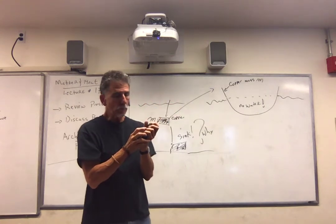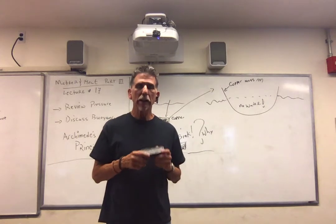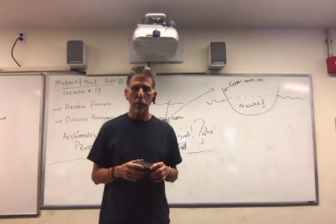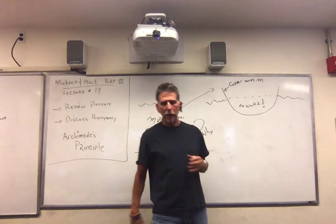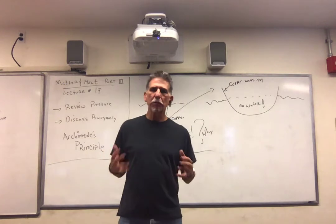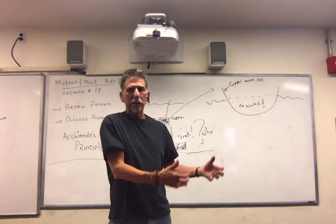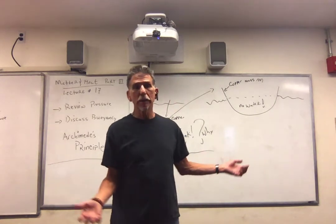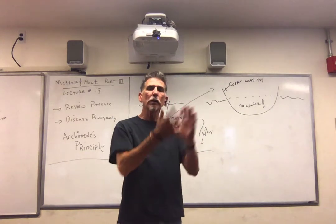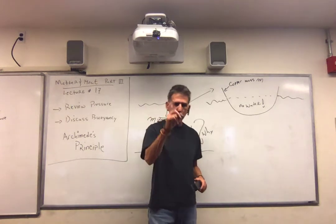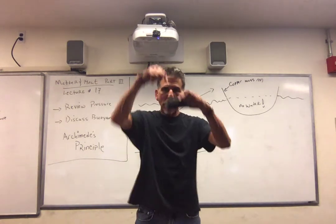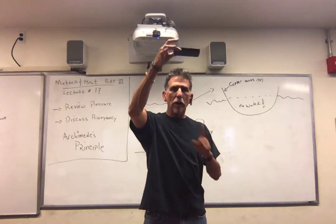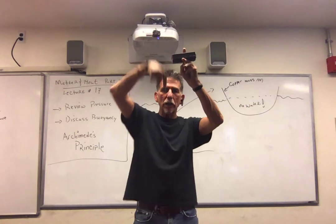Archimedes' principle says that there's going to be a force upward called the buoyant force. You know about this: when you try to lift your friend Vito — guy weighs a ton — when you go in the ocean and try to lift him, it's easier. The water seems to be helping. So the buoyant force is a force upward, and the weight is the force down. Clearly, if something's going to float, the force upward has to be greater than the weight downward.